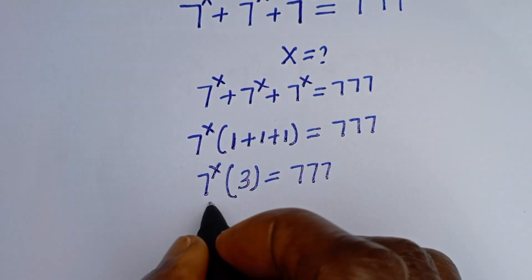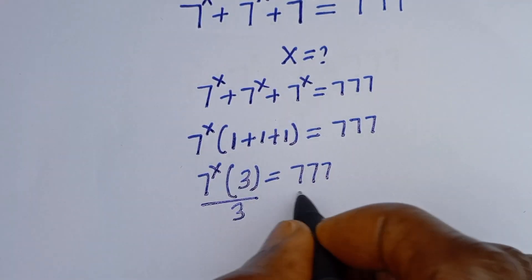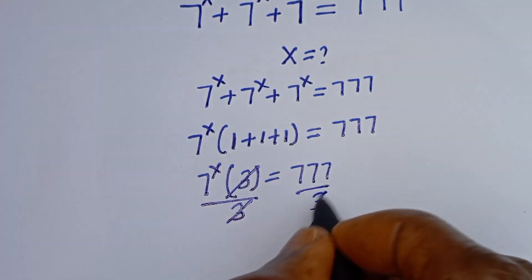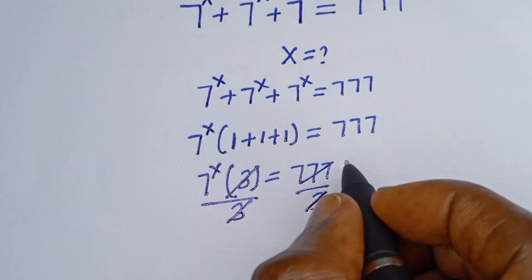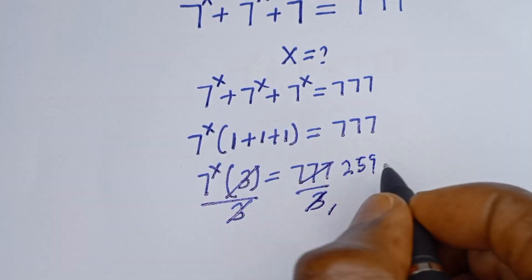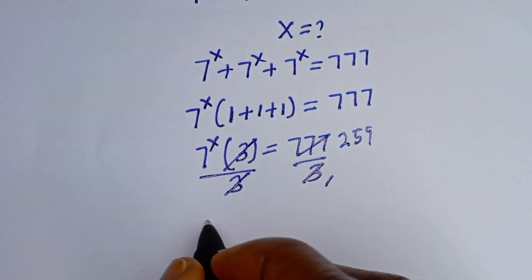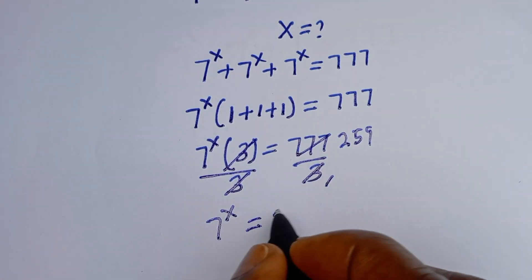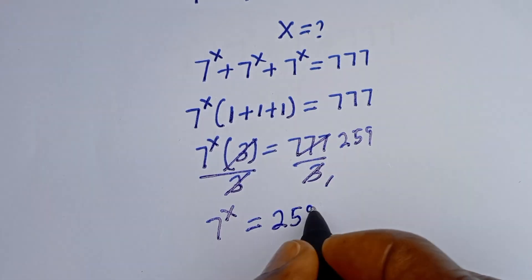Let's divide both sides of the equation by 3. This divided by 3 — the 3 cancels — giving us 259. Then we have 7 to the power of s is equal to 259.